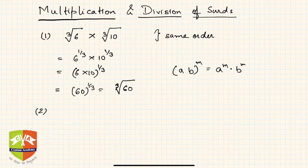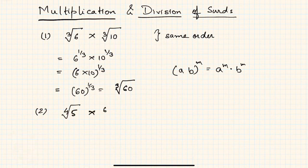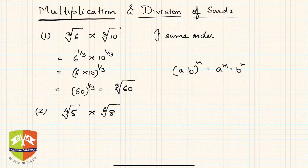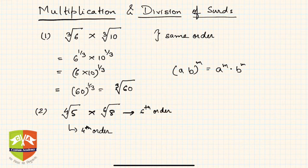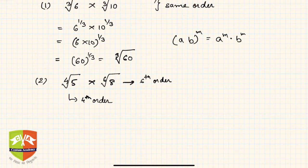Now let us take an example where the surds are of different order. We have to multiply the fourth root of five with the sixth root of eight. Clearly the first is fourth order and the second is sixth order. To handle this, we try to convert both into the same order. The LCM of four and six is twelve, so we will convert both into order twelve.